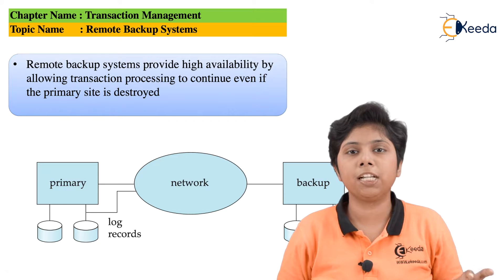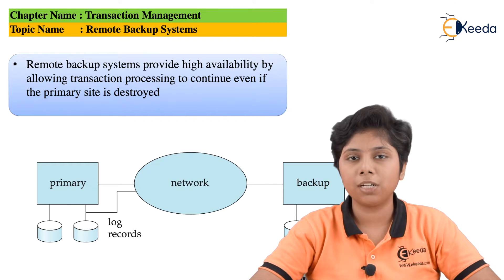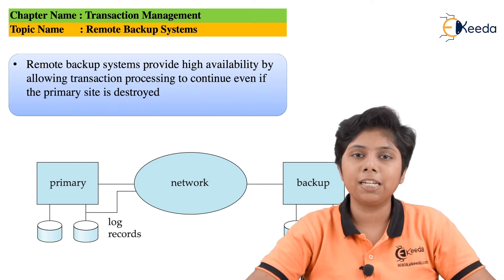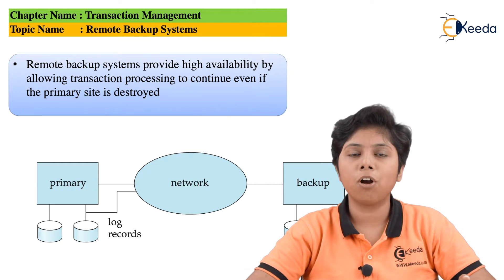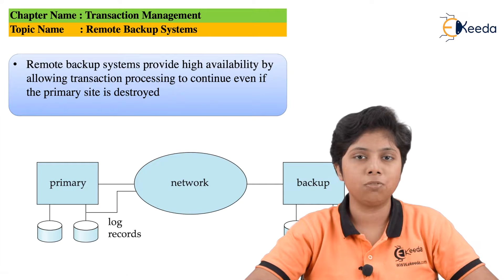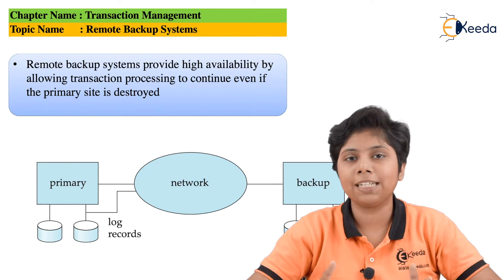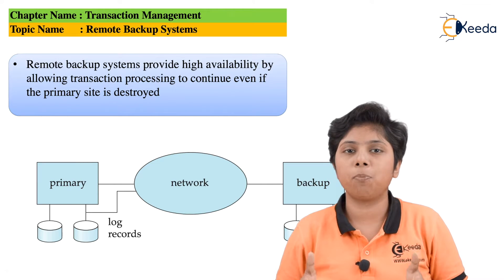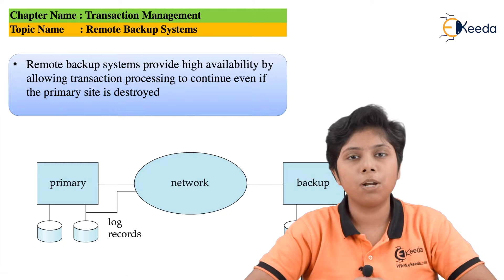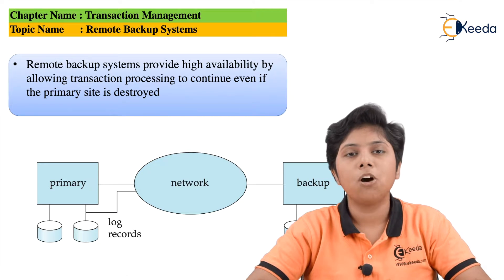The secondary site is not physically connected with the primary site but connected via a network. If the primary site accesses a database, updates it, and fails to commit the transaction, the update is sent to the secondary site as part of the remote backup system. From there, it can fetch the data, determine at which point the problem occurred, and solve it by rolling back the transaction. After each checkpoint or operation on the transaction, the updated result is sent back to the secondary or remote site.